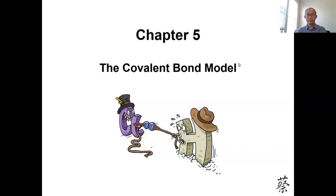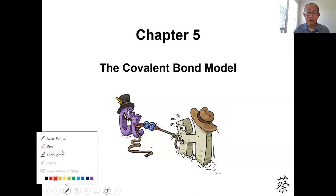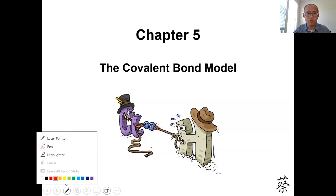Hi everyone, welcome back. Today we're going to cover Chapter 5, the covalent bond model. Remember, in Chapter 4 we talked about ionic bonding, which is the transfer of electrons. So in this chapter, we're going to study another type of bonding character for compounds and for atoms bonding together.